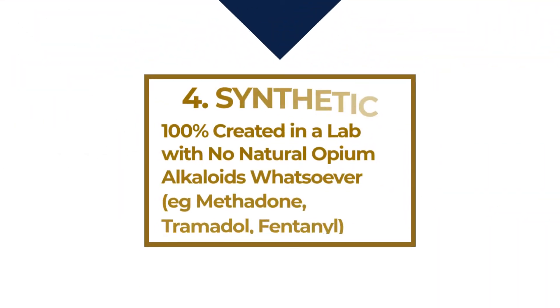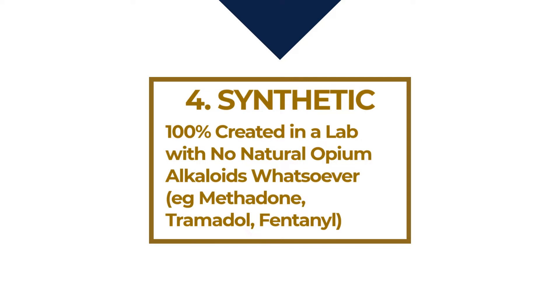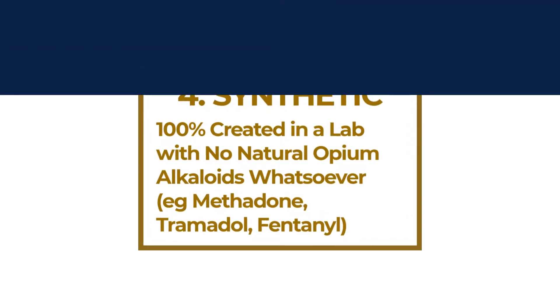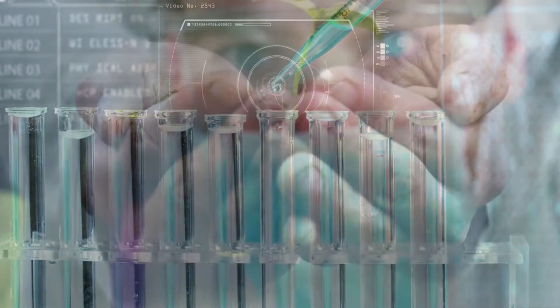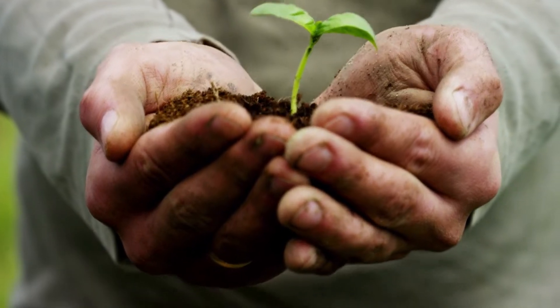Class four of opioids are fully synthetic opioids — things like tramadol and methadone. These are not endogenous opioids, not opium alkaloids, and not semi-synthetic. They are opioids 100 percent created in a laboratory that have nothing to do with natural products found in nature.